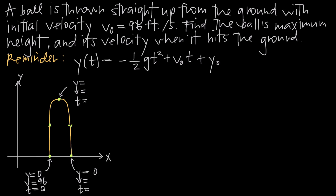We also know that velocity at the ball's maximum height is going to be zero. Velocity represents speed in a particular direction. When the ball is thrown up and reaches its maximum height, it has finished moving up but hasn't yet started moving down. So at that very top point it stopped moving up but hasn't started moving down, meaning it's not moving in any particular direction — so velocity has to be zero.